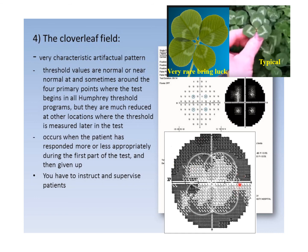The cloverleaf artifact appears when each quadrant of the field test starts with the central location — where the patient is paying attention early — but then attention is lost as the test progresses to peripheral points. This means the patient was not paying adequate attention throughout the test.